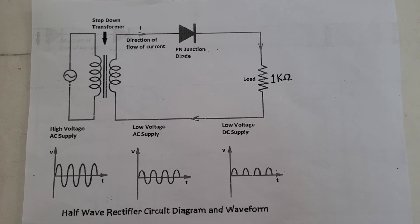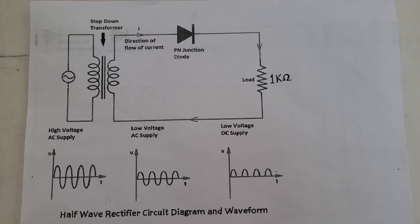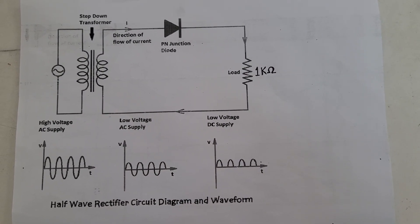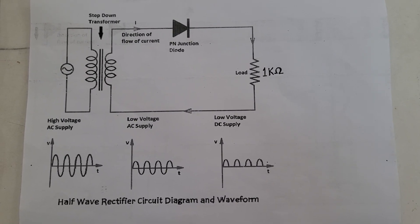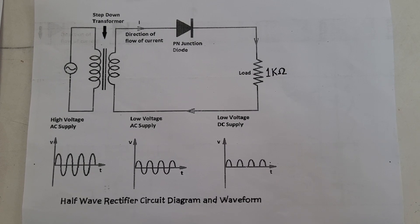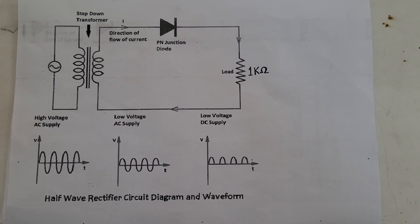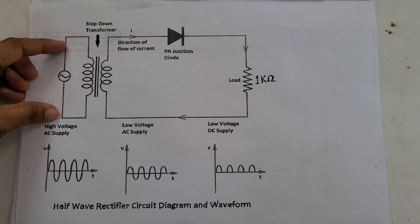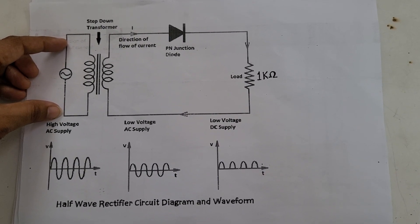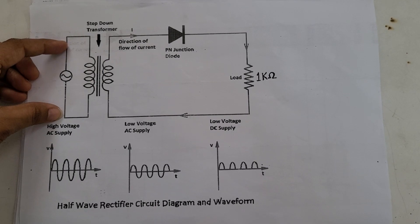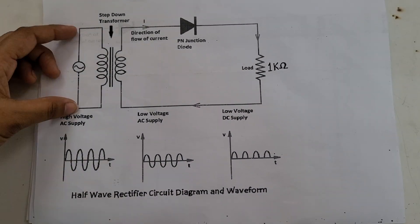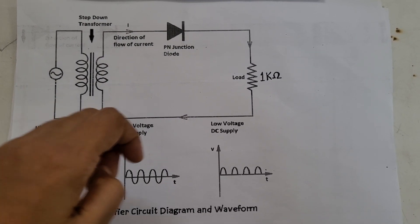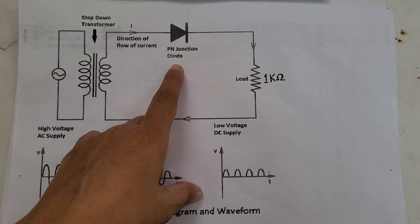This is the circuit diagram of a half wave rectifier and its waveform. The diode is arranged in forward bias. A half wave rectifier is a type of rectifier which converts the positive half cycle of the input signal into pulsating DC as the output signal. In this circuit we are going to use an AC source which supplies alternating current, represented by a sinusoidal waveform. We also need a step down transformer and a diode connected in the forward direction.